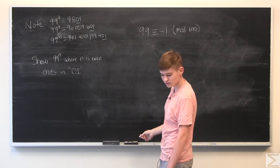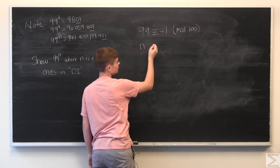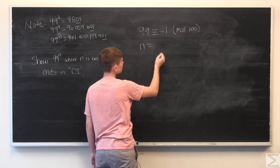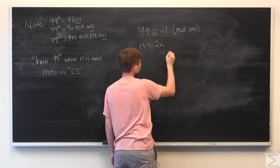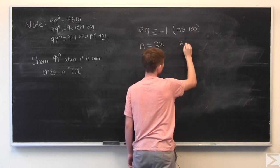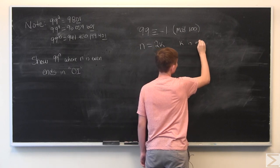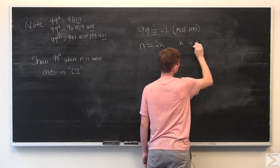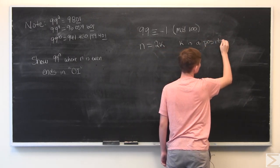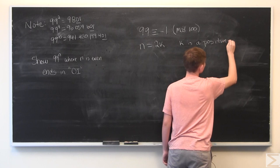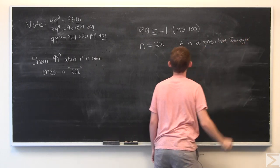All right so we are going to define n as an even number integer. And we do this by saying n is equal to 2 times k, where k is a positive integer.